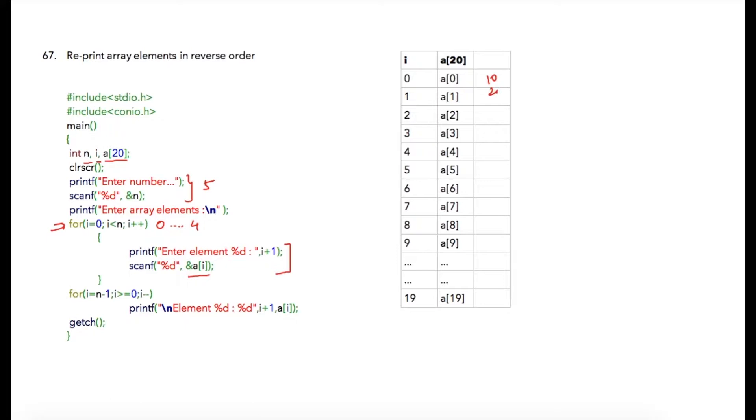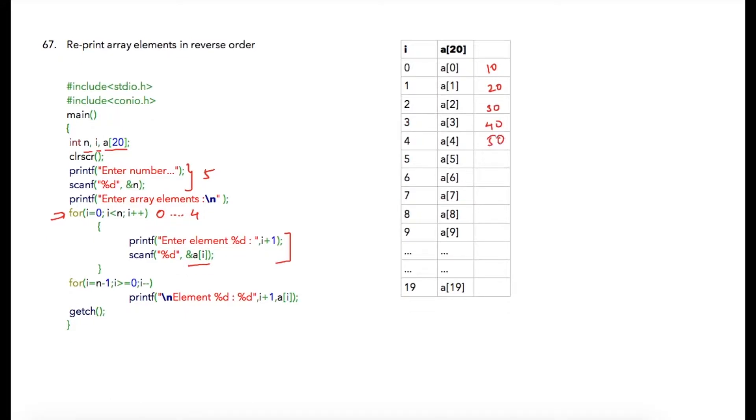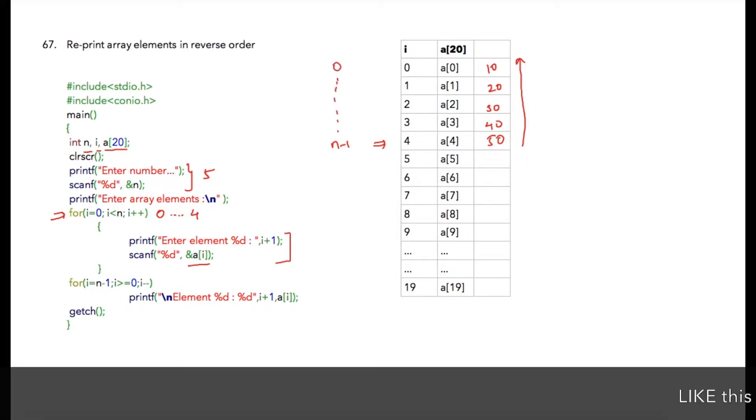Suppose user has entered 10, 20, 30, 40 and 50. In order to print in reverse direction our second loop for printing these array elements to start from this value that is n minus one because n was entered as five, so starting from n minus one the loop will go till zero.